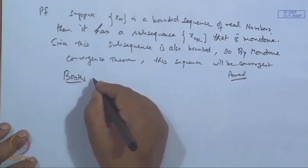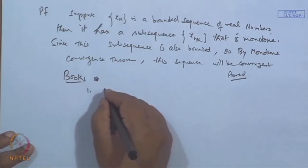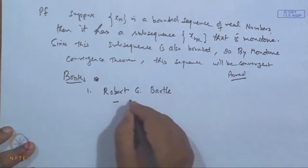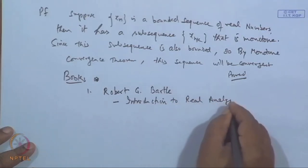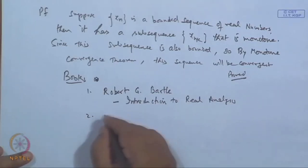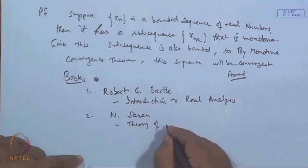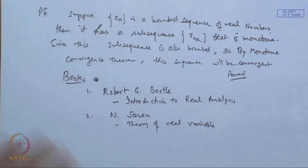This completes the first module covering Cantor's, Dedekind's, and the theory of sequences. The reference books used are: Introduction to Real Analysis by Robert G. Bartle, and Theory of Real Variables by Ensign.